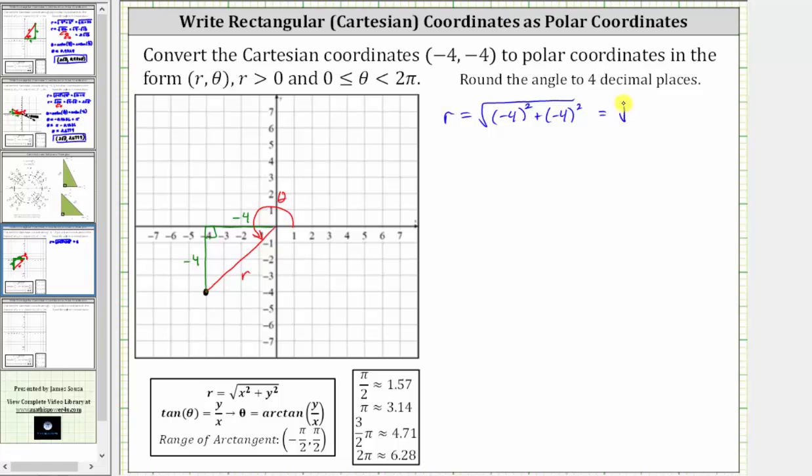Simplifying, we have the square root of 16 plus 16. 16 plus 16 is equal to 32.